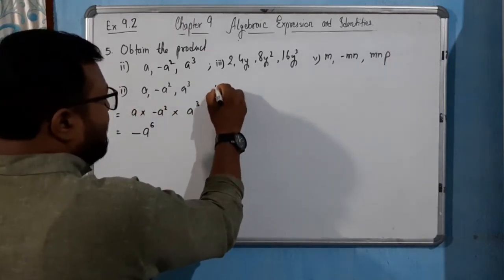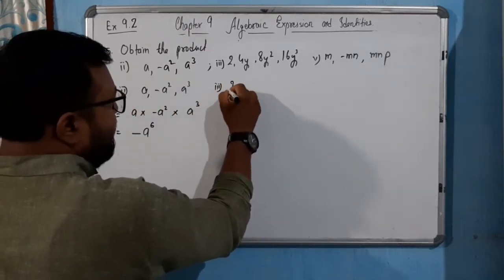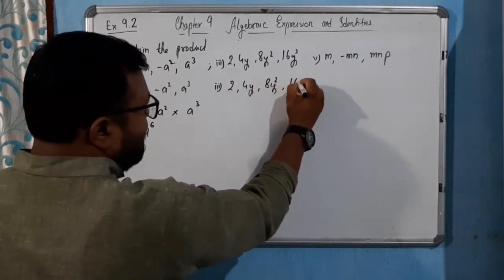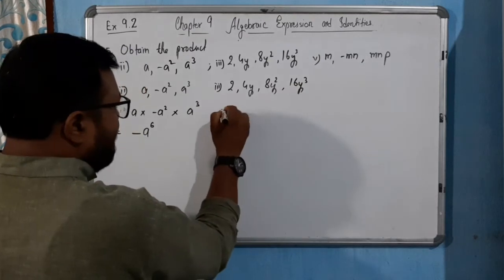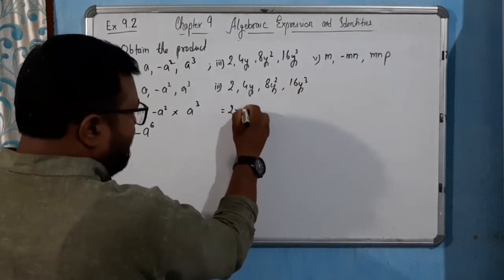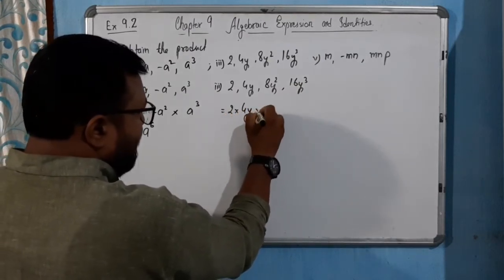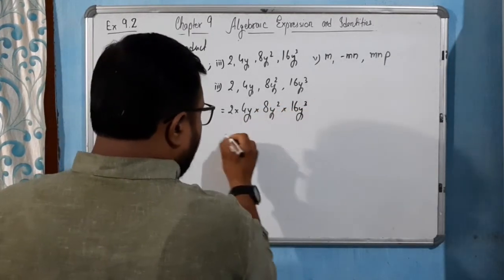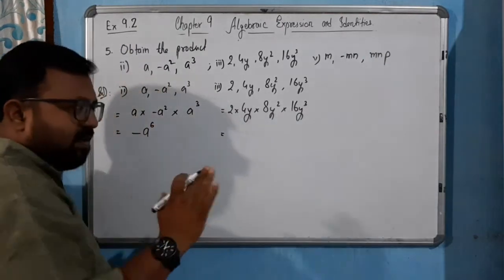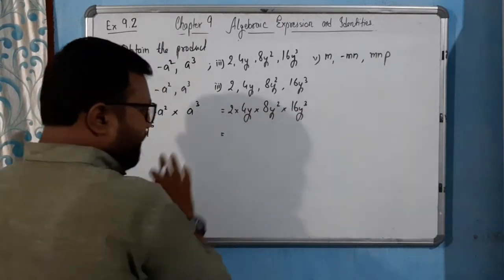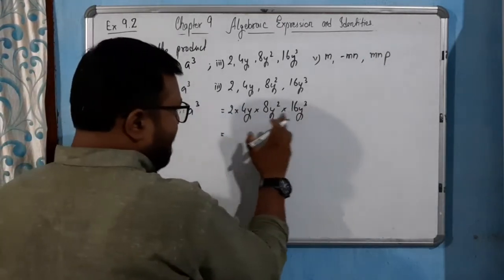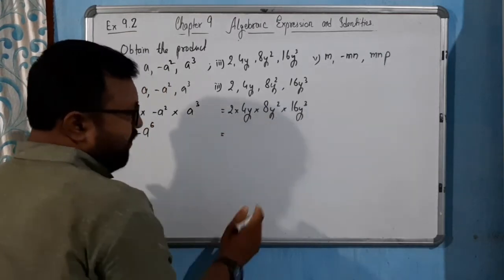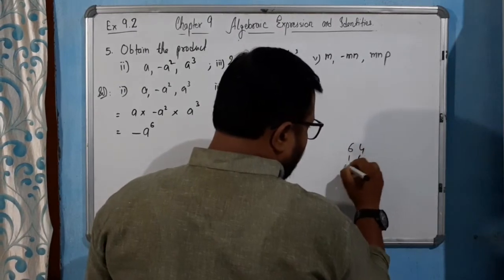Now in this case, third one: 2 into 4y means 8y square and 16y cube. Here, 2 into 4y into 8y square into 16y cube. First we will multiply the sign. All are positive, so answer will be positive. Now multiply the numbers: 4 to 8, 8 to 64, 64 into 16, how much you will get?